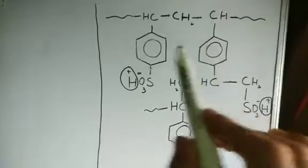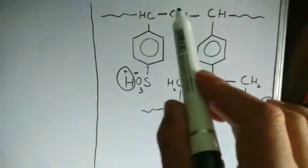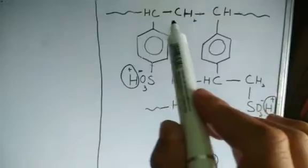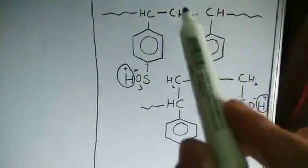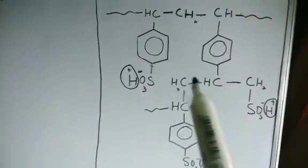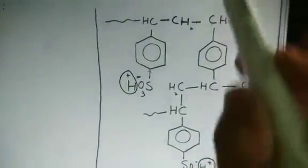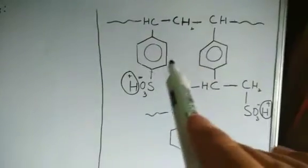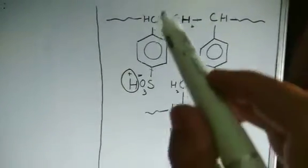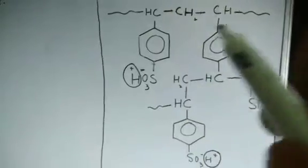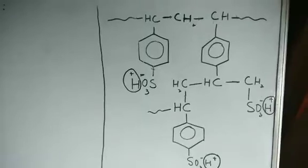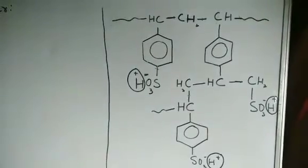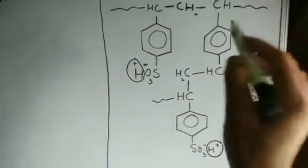This structure is a monomer of styrene, and this portion is a monomer of divinylbenzene. Basically, these are the two components present in ion exchangers — styrene and divinylbenzene — forming the benzene framework. So this is the cation exchange resin, and we have the two active sites.